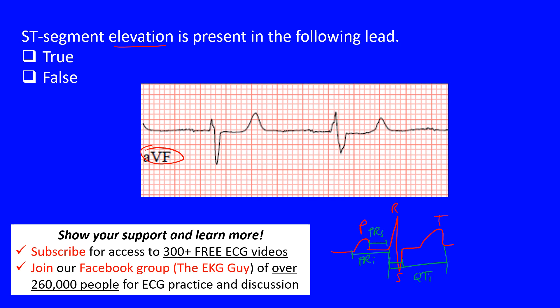Now, the ST segment is the one we haven't mentioned yet. It starts at the J point — the end of the QRS complex — and goes until the beginning of the T wave. That is the ST segment, and that's what this question is looking at.